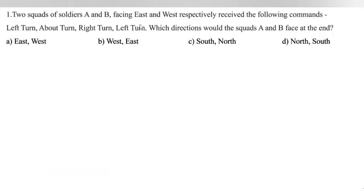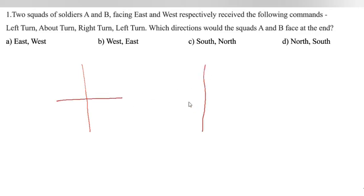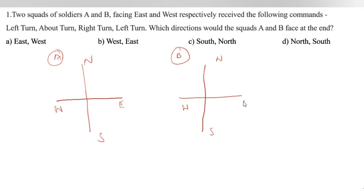Two squads of soldiers A and B facing East and West respectively receive the following commands: left turn, about turn, right turn, left turn. Which direction would the squads A and B face at the end? We have to draw the direction details. A is facing East and B is facing West.